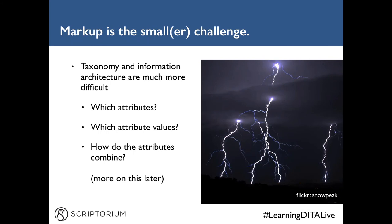When it comes to conditions, the DITA markup is the smaller challenge. Taxonomy and information architecture are much more difficult. Key questions include: which attributes do you need to achieve the conditional processing you're looking for? What values should each of those attributes have? How do all your different attributes combine, intersect, and overlap? This planning is really what it takes to start using conditions effectively.